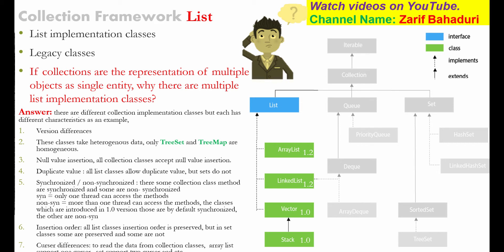Generally, collection classes can hold heterogeneous data and you can add different types to them — we will see examples and practical demos to make this clear. Another difference: all collection classes accept null value insertion. Also, all List classes allow duplicate values, but Set classes do not allow duplicate values. For example, HashSet and LinkedHashSet do not accept duplicates.